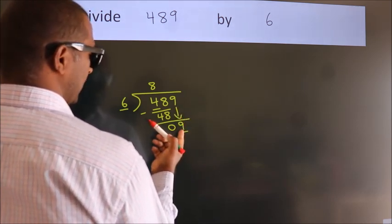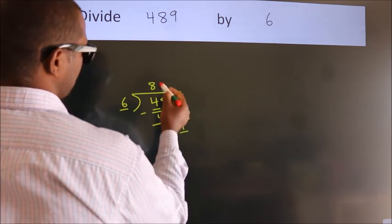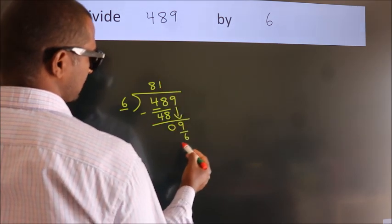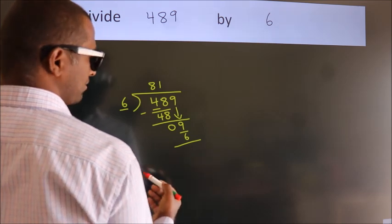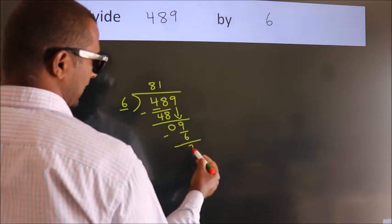The number close to 9 in the 6 table is 6 times 1, which is 6. Now we subtract and get 3.